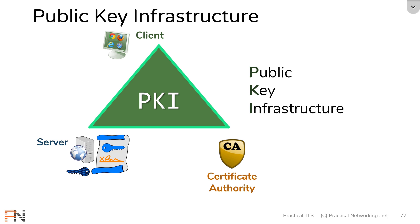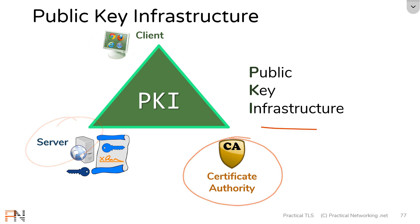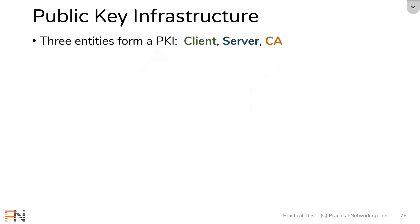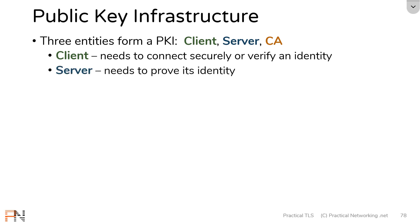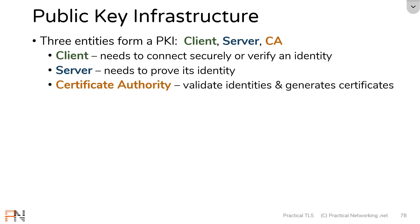Anytime you have an instance of a client, server, and certificate authority, you have a public key infrastructure. There are three entities which form a PKI: the client, the server, and the CA. The client is the entity that needs to connect securely to something or to verify a particular identity. The server is the entity that needs to prove its identity. And the certificate authority is the governing entity which verifies identities and generates certificates.